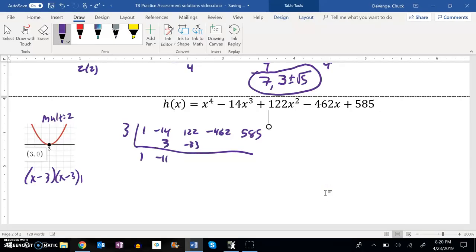multiply, and then let's see, 122 minus 33 is 89, multiply that by 3, 267, subtract 462 from that, negative 195, multiply that by 3 is negative 585.